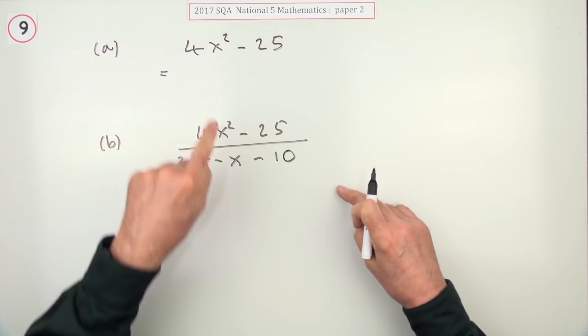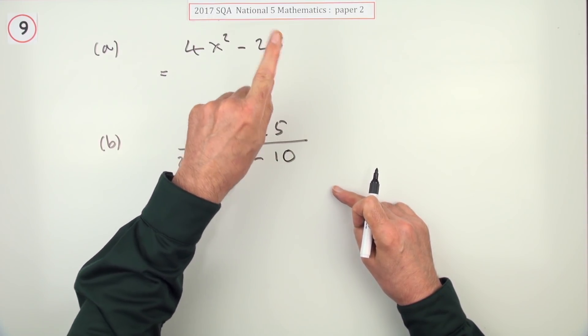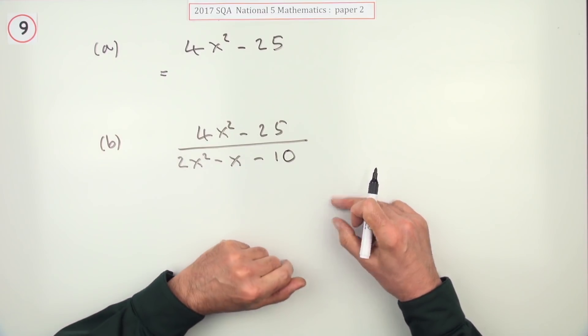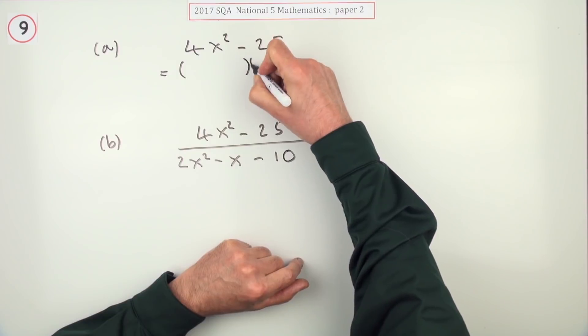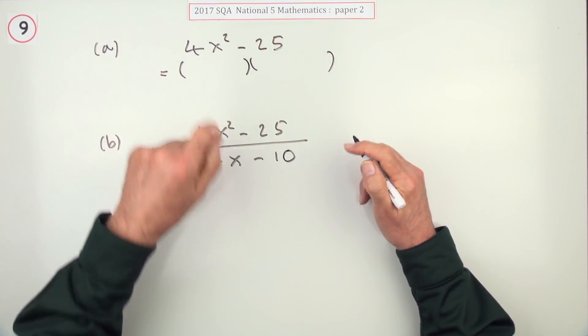Factorize this for one mark. You recognize you've got the difference of two squares. Notice there's no middle to this, that's not what you would call a trinomial because there's only two parts not three. So there's no common factors. That's the one that breaks into two brackets where what's being squared to make this must be 2x times 2x.